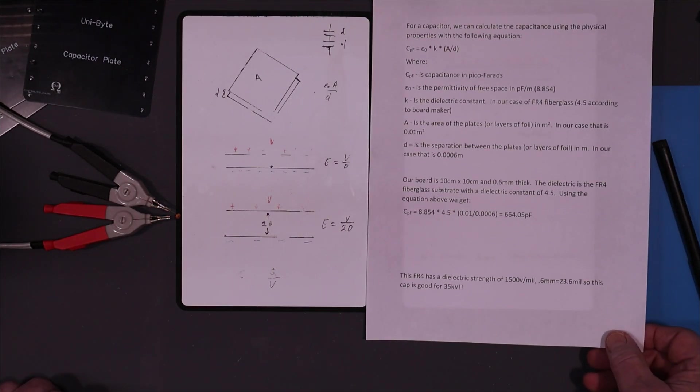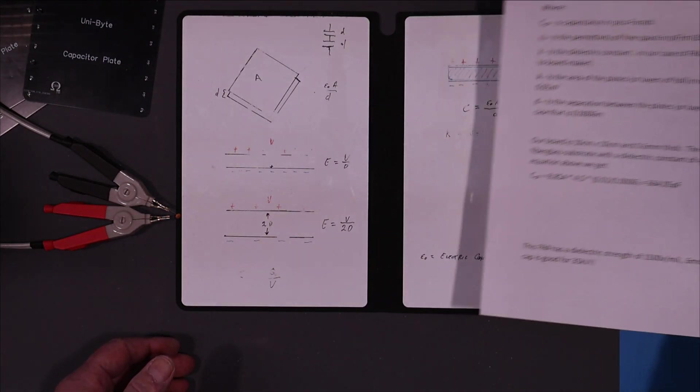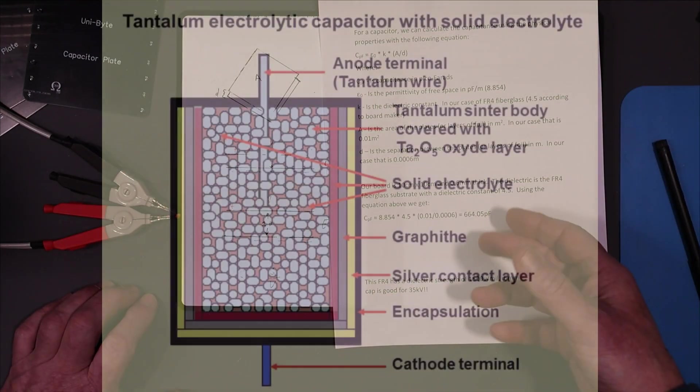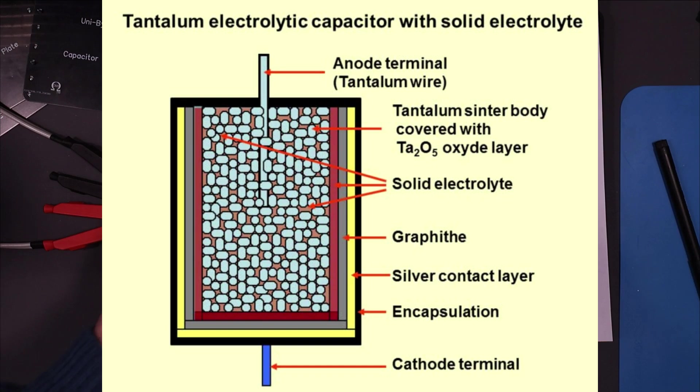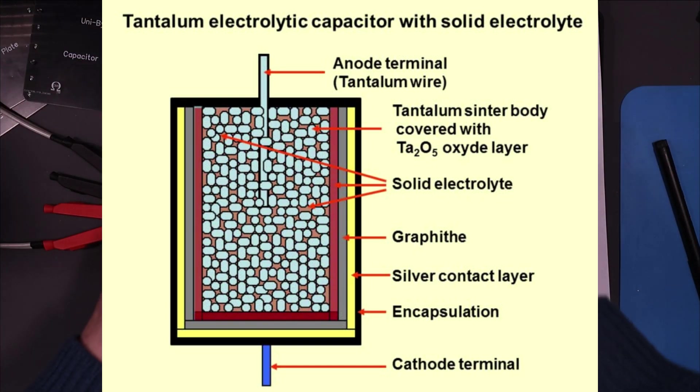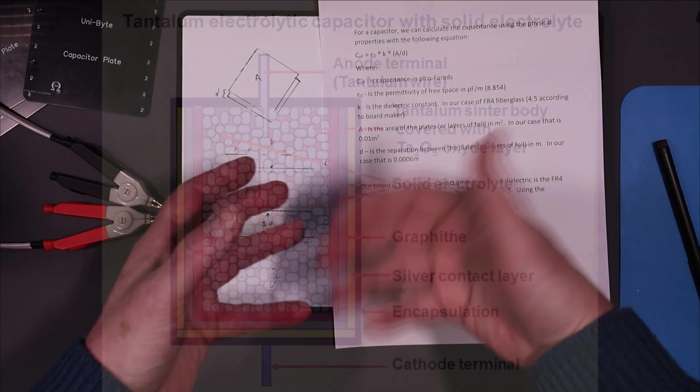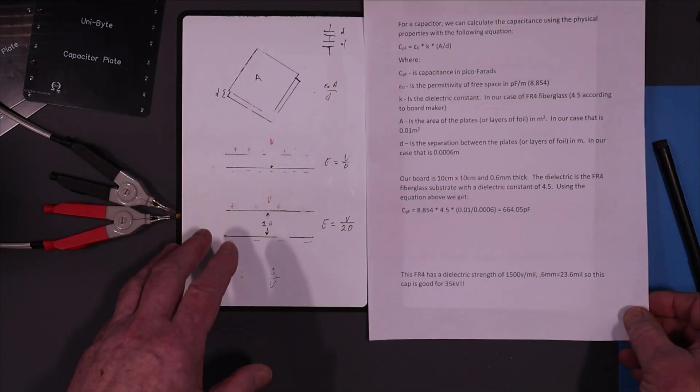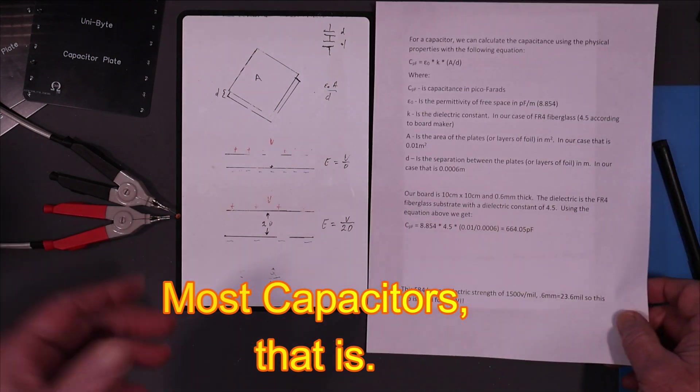All capacitors are basically exactly the same as this. The only ones that would be considerably different would be tantalum capacitors, which don't use layers like that. They use a sintering process that greatly increases the surface area. Then they cover that with an oxide layer, which is an insulating dielectric layer. So they're a little bit more complicated. This is how capacitors are made, just what we did here.